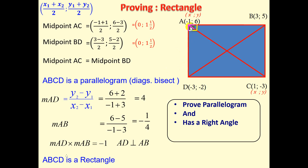There are other ways of proving a quadrilateral is a rectangle. Another method would be to prove it's a parallelogram as we've done, and instead of proving a right angle, find the lengths of diagonals AC and BD. If the lengths of the diagonals are equal, then we can conclude it is a rectangle, because in a rectangle the diagonals are equal.